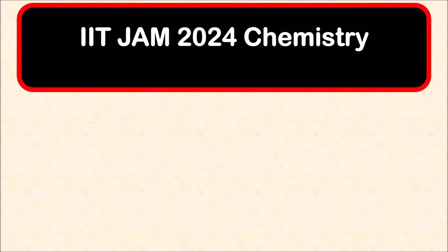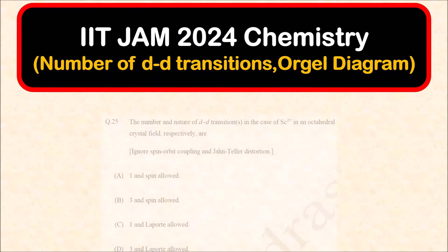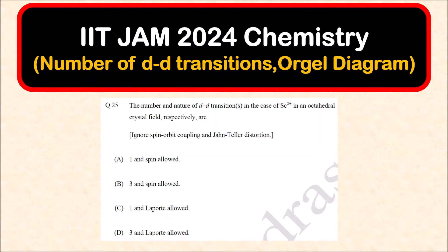Hello everyone. Welcome to Chemezon Complete Chemistry. In today's video, we are going to solve another question of JAMB 2024 chemistry paper. It is based on finding out the number of d-d transitions and the concept of the Orgel diagram. The question is: the number and nature of d-d transition(s) in the case of scandium 2+ in an octahedral crystal field.